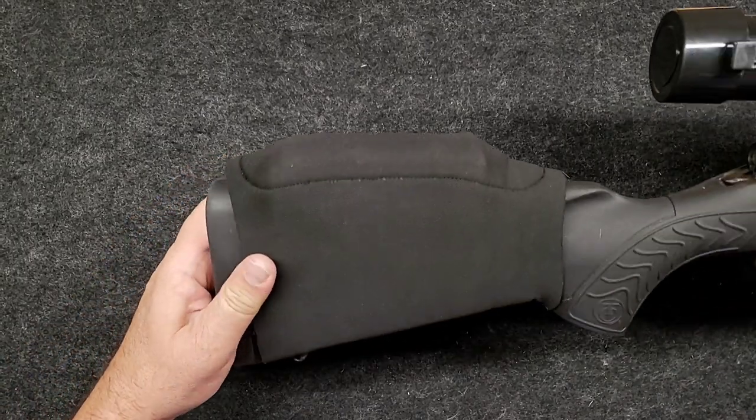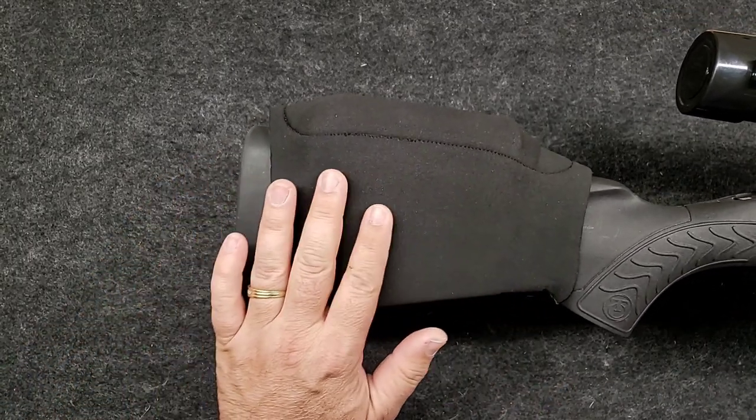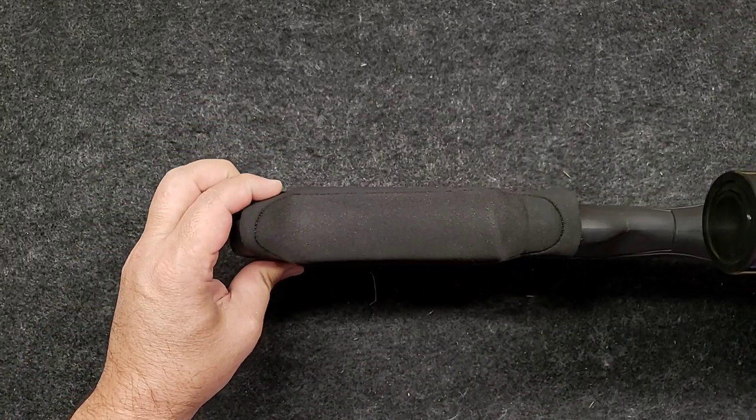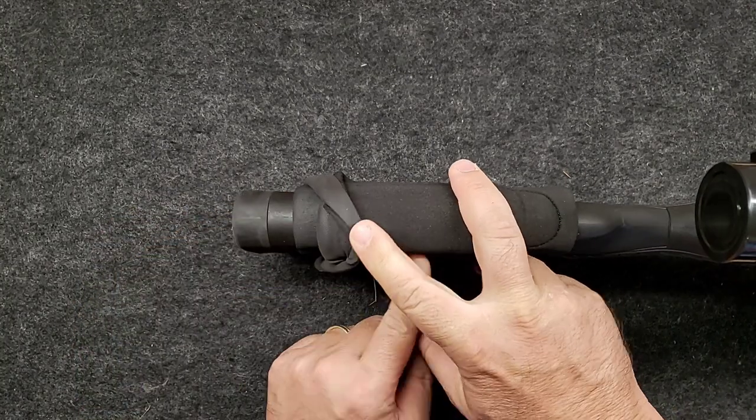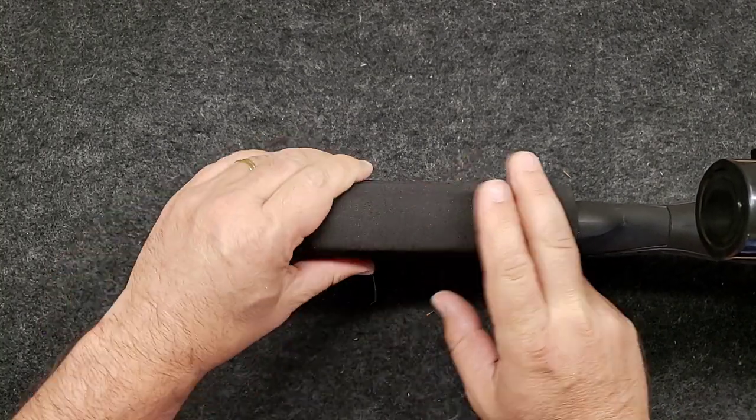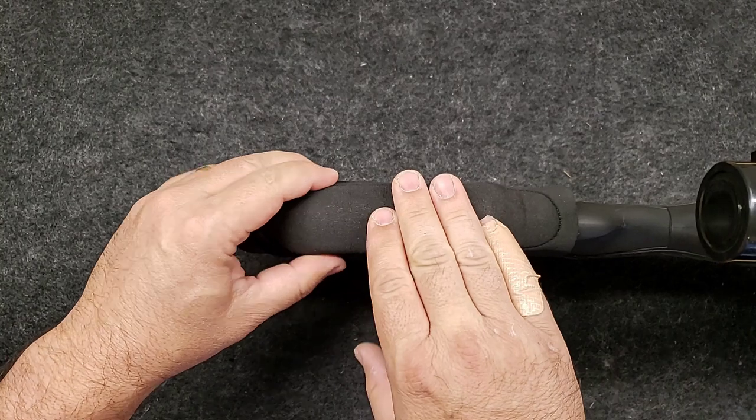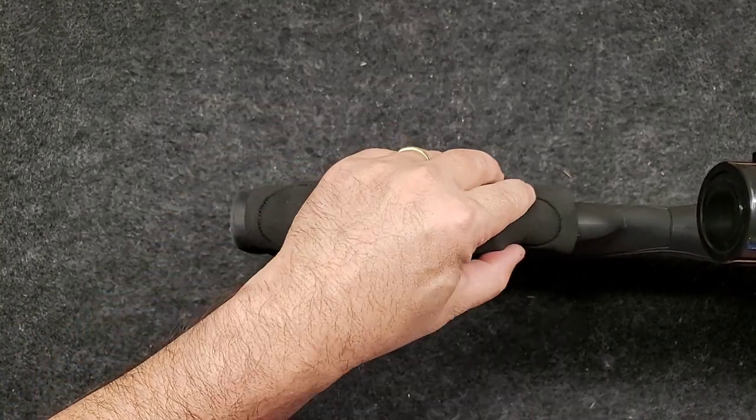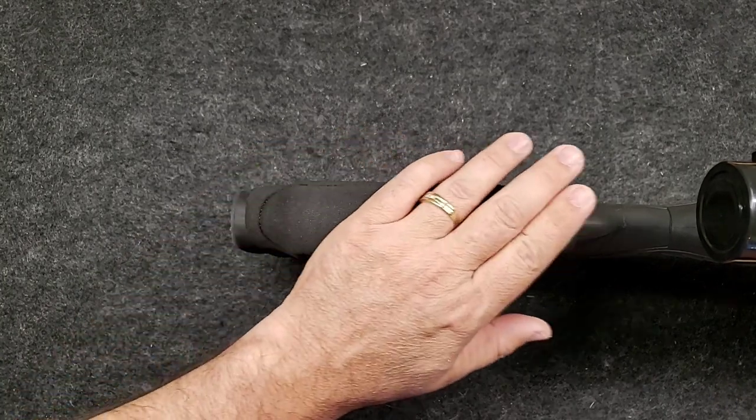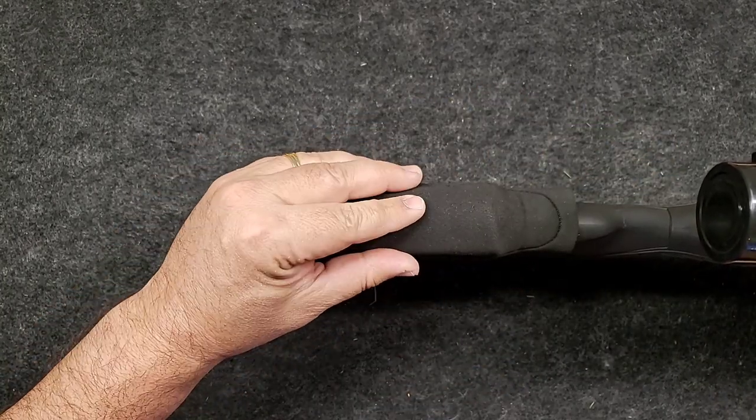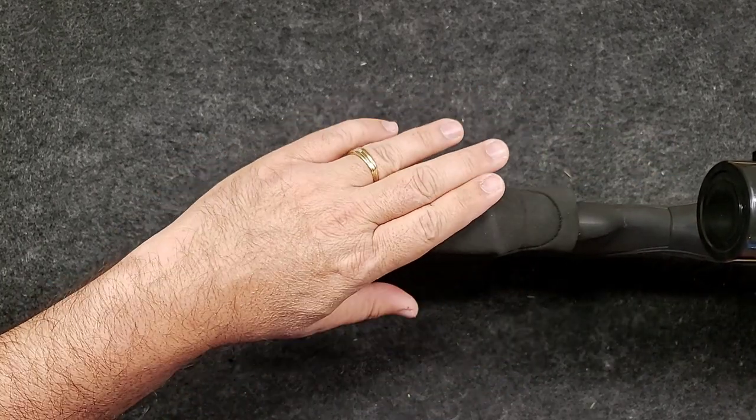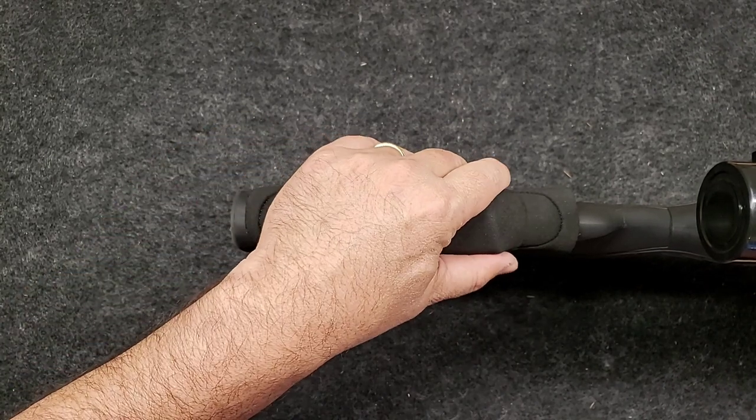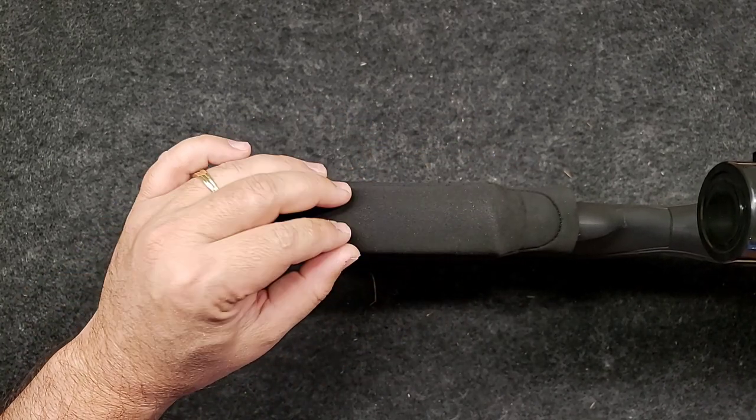If you remember, we got this neoprene with a foam riser inside of it. The neoprene goes over and you rest your cheek here. This has worked good for getting me in line with the scope and I've not had any issues with alignment once I figured out which foam piece needed to go in here, because it came with three different heights.